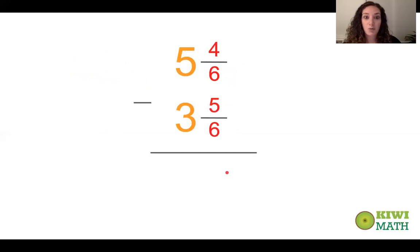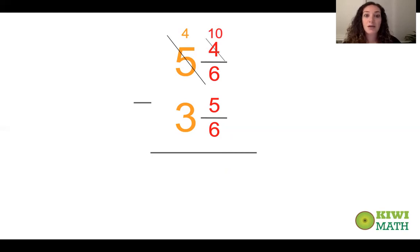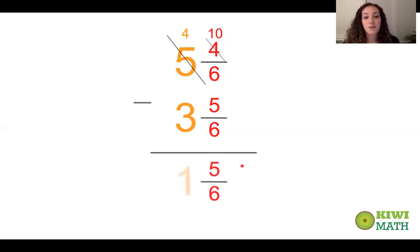I want to show you what it looks like vertically — this is the same problem we just did, just another way to write it. It's easier because you don't have to rewrite the numbers, you just jot them on top. Just like before, we didn't have enough sixths, so we take from the wholes: now we have four wholes, and we add the six sixths to the four sixths to get ten sixths. Ten sixths minus five sixths is five sixths, and four minus three is one — our answer is one and five sixths.